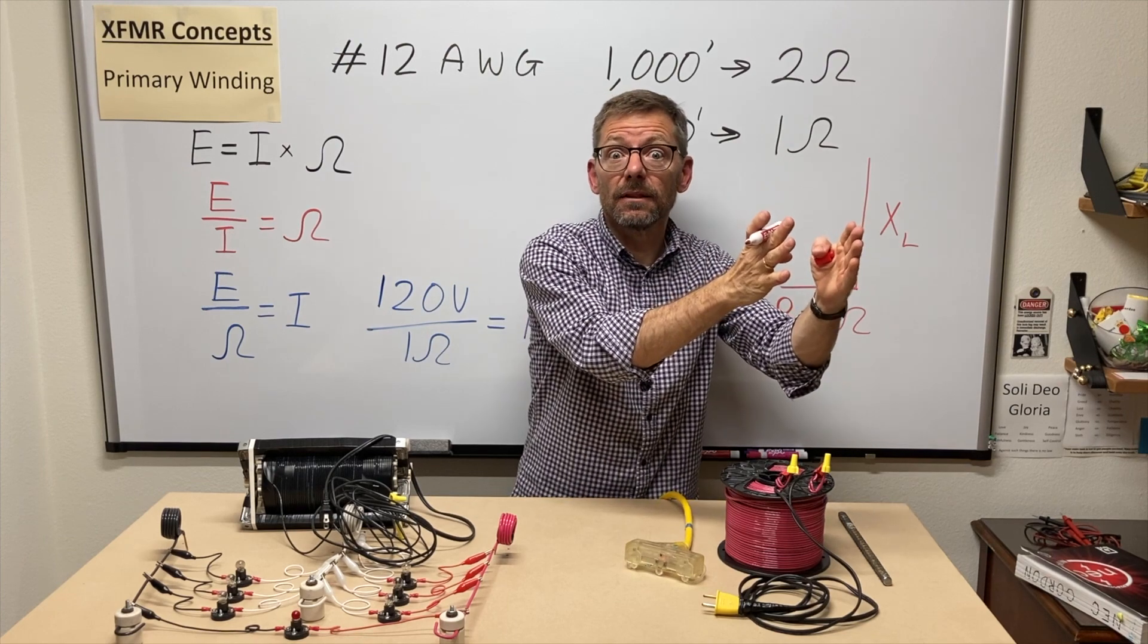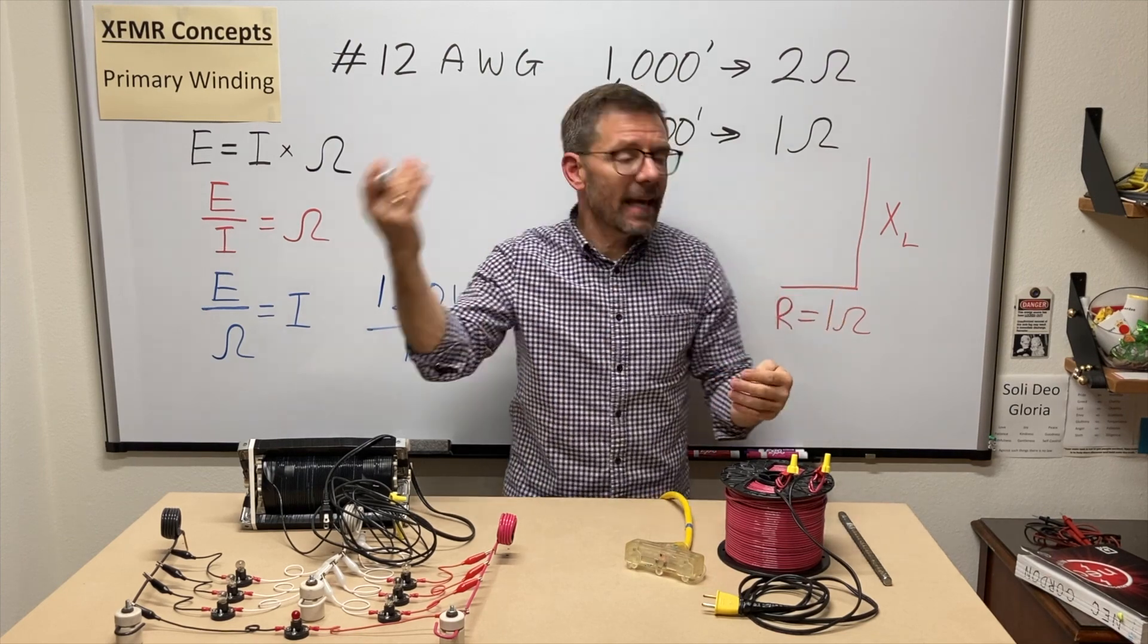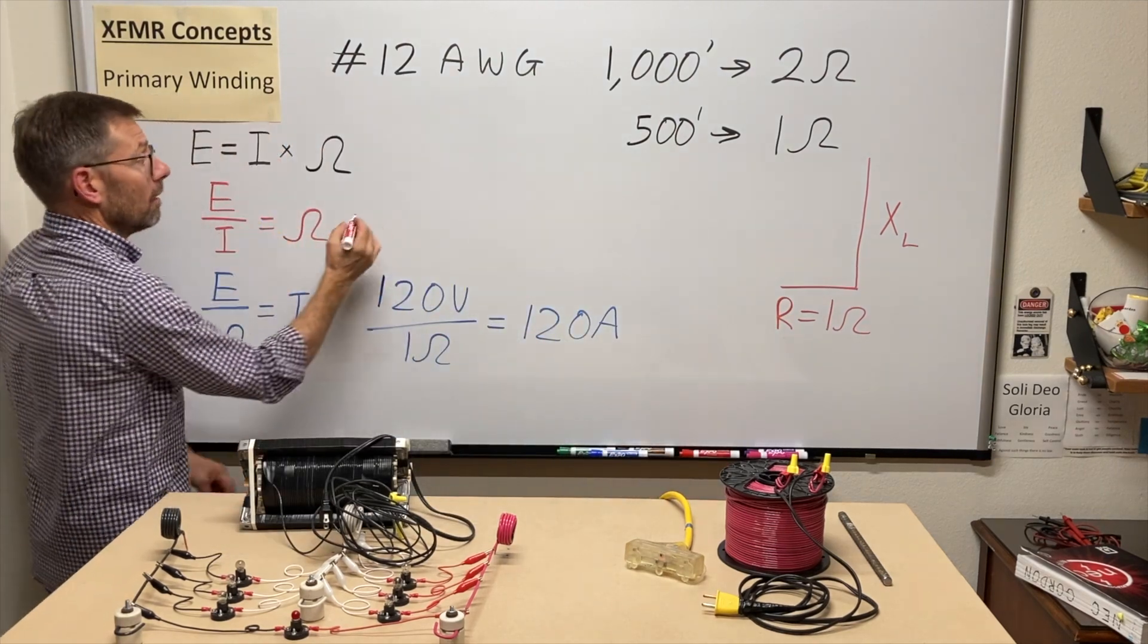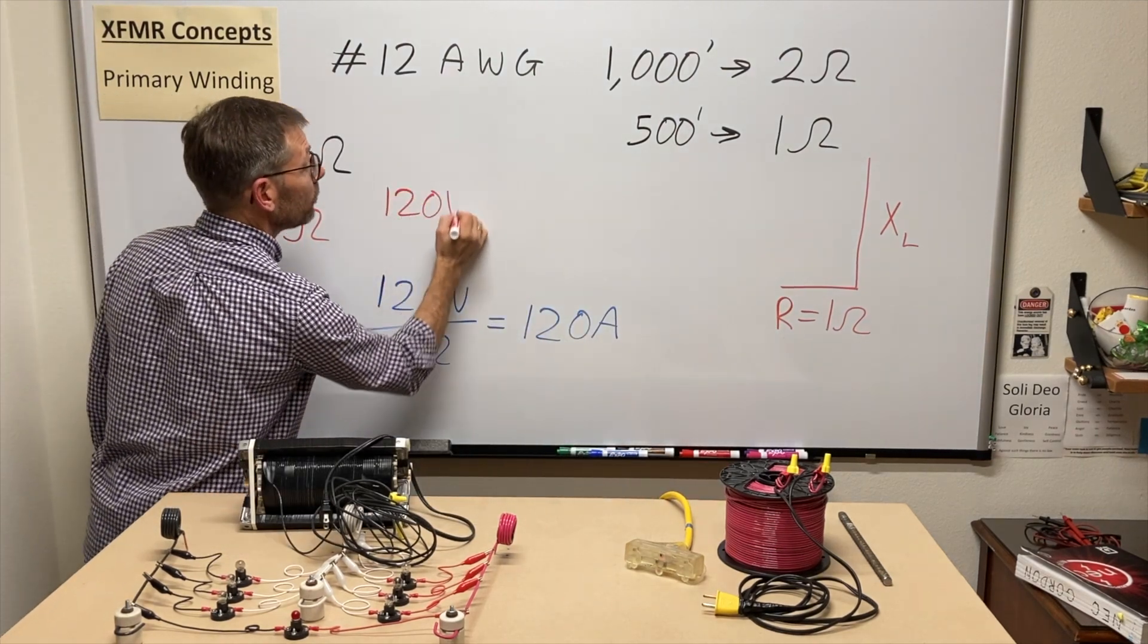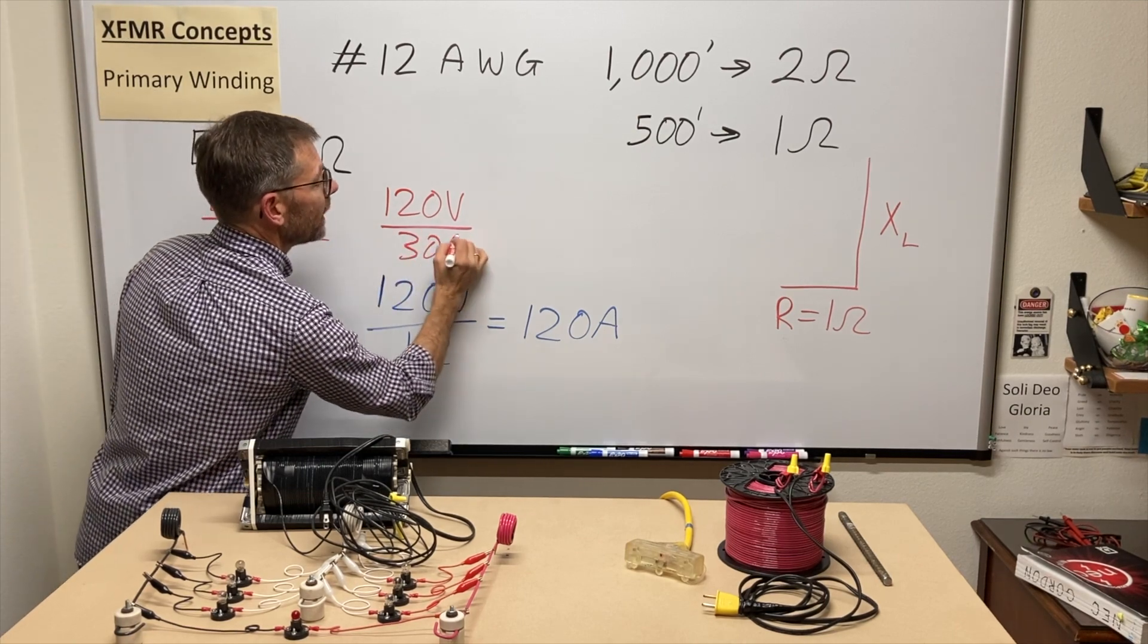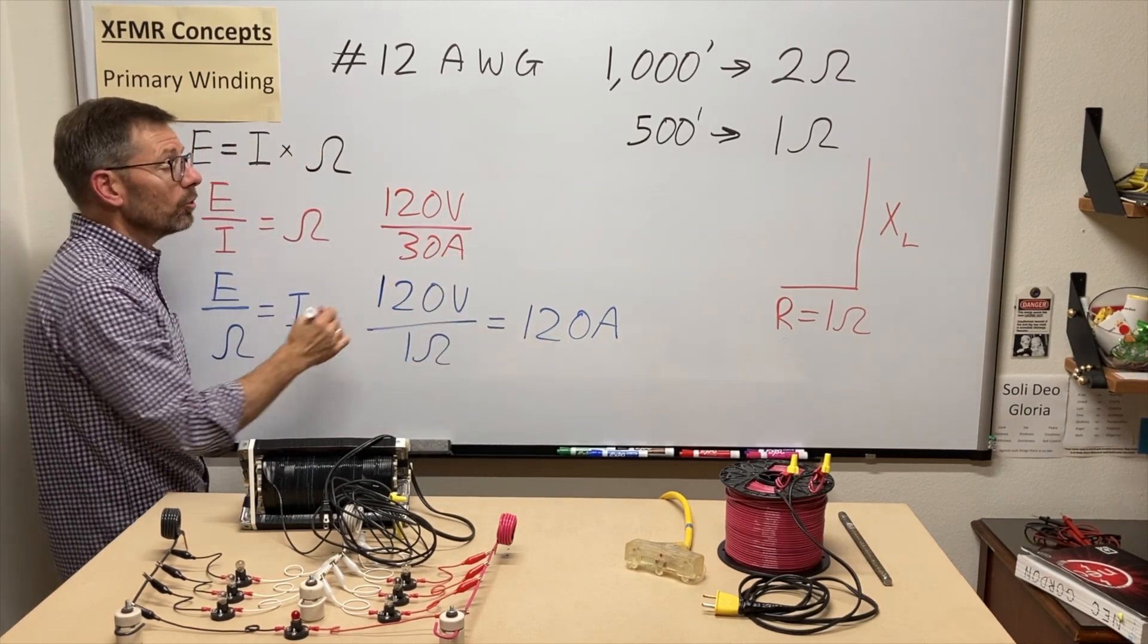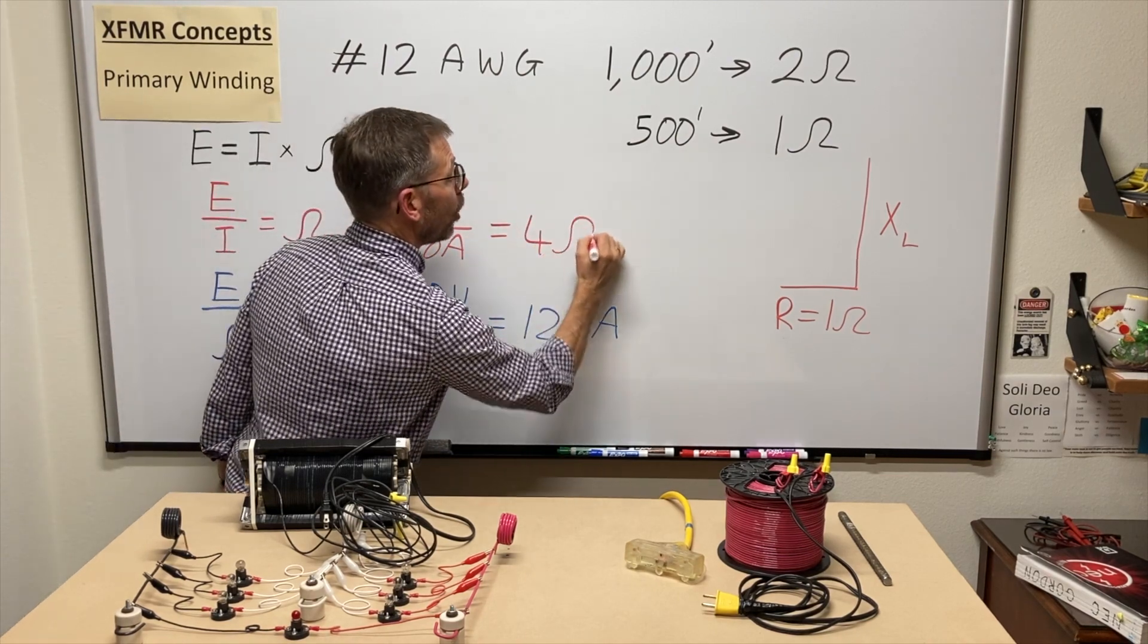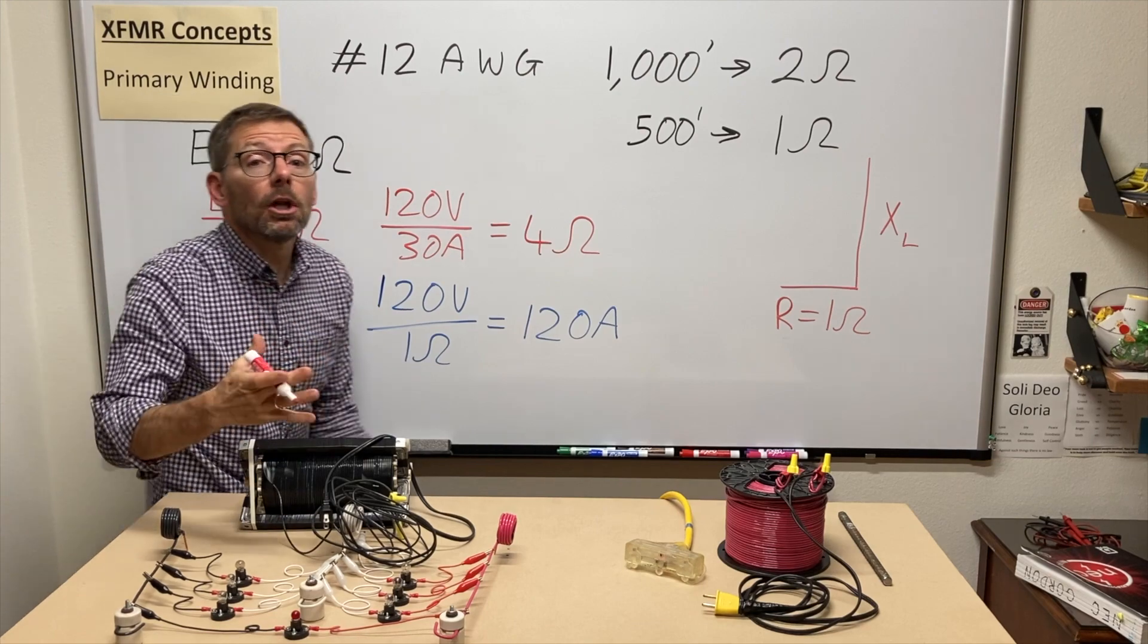Or I could do this. I applied 120 volts to the coil, and it gave me 30 amps flowing through there, which must mean that I had 4 ohms of total opposition.